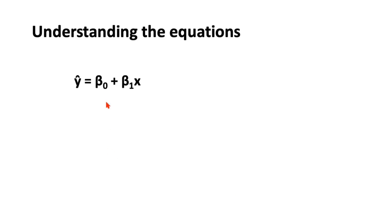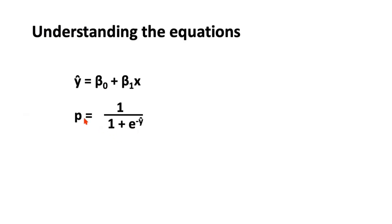In linear regression with one variable, we had: ŷ = β₀ + β₁x. In logistic regression, we're predicting probabilities using a sigmoid function. The equation is: P = 1 / (1 + e^(−ŷ)), where ŷ = β₀ + β₁x. Let's understand the influence of β₀ and β₁ on the probability.